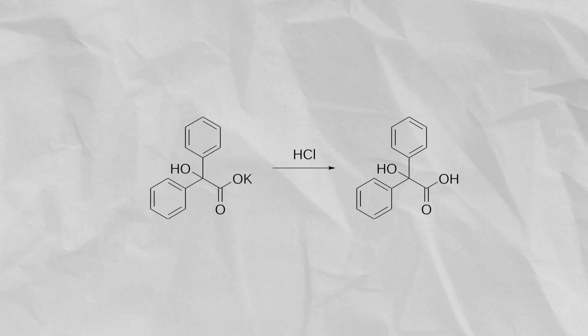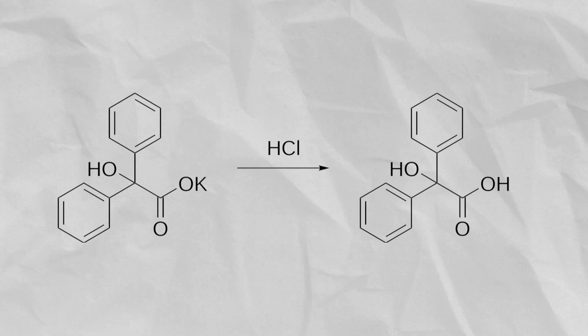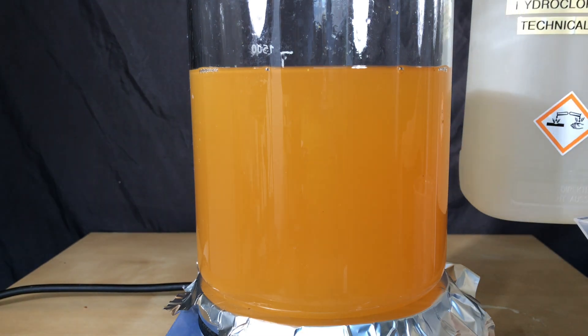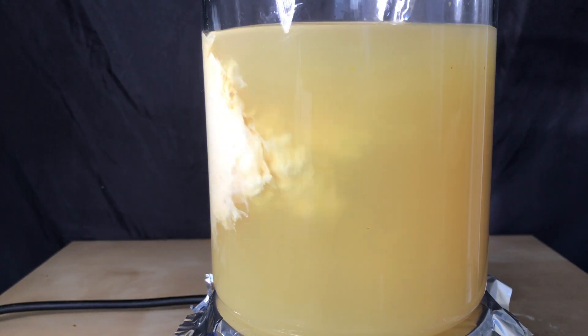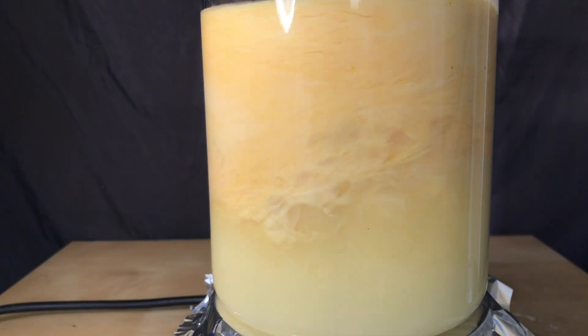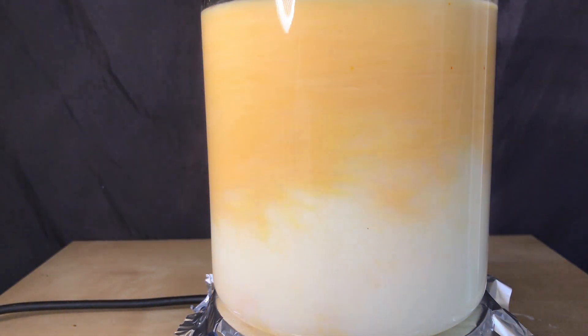Next we need to turn the benzoic acid salts into benzoic acid. We're going to do this by using hydrochloric acid. I used about 500 milliliters of 37% hydrochloric acid, which is a huge excess. Benzoic acid has a solubility of about 2 grams per liter so we're not going to lose a lot.